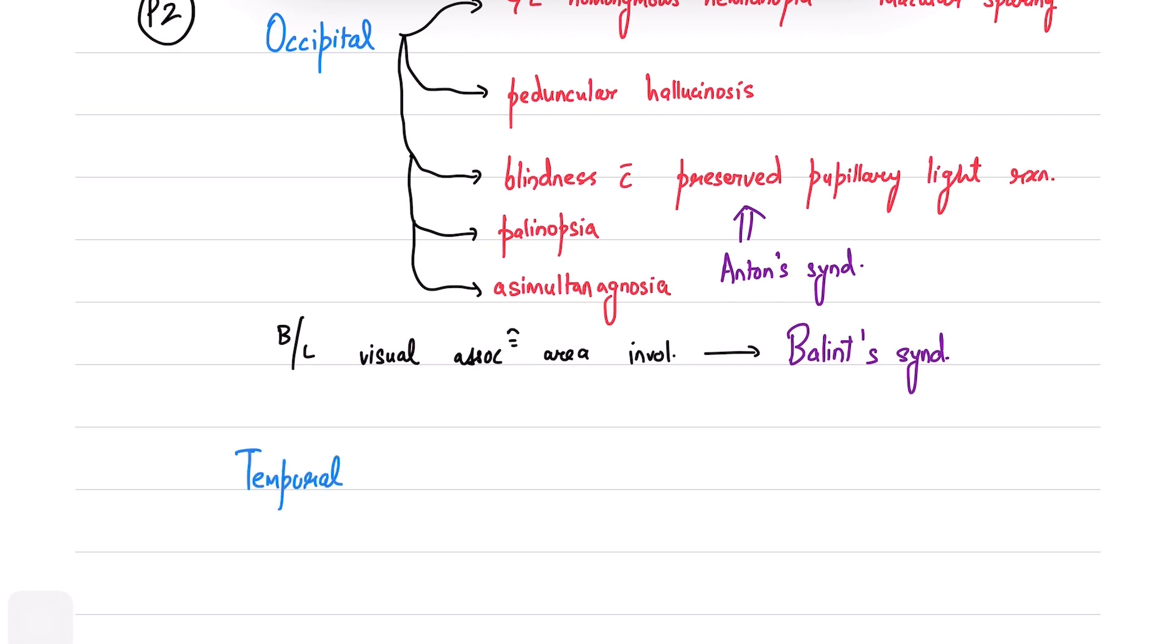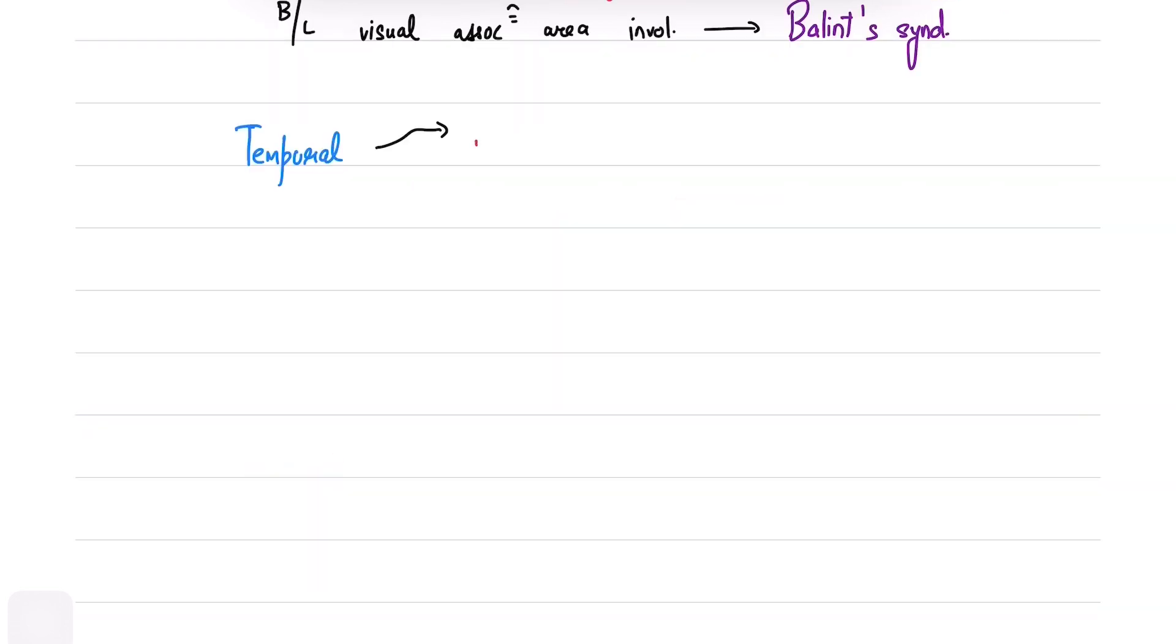Temporal and hippocampal involvement will affect memory, especially if it is in the dominant hemisphere. Alexia without agraphia is also seen.